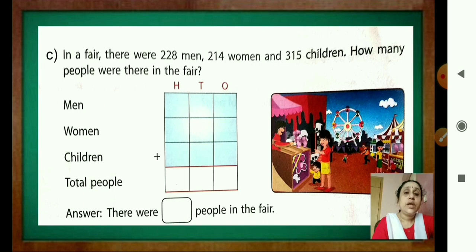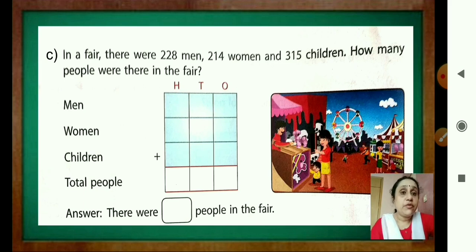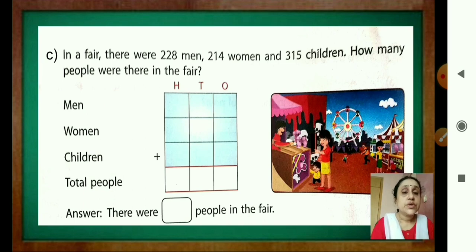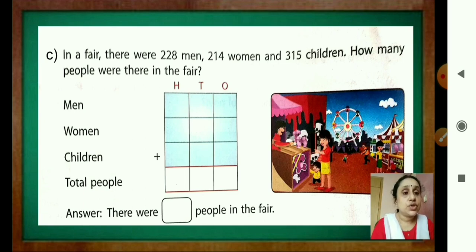Now this question: in a fair there were 228 men, 214 women, and 315 children. How many people were there in the fair? Write the number of men, number of women, and number of children, then add these three numbers to get the total number of people at the fair and write the answer. Have you understood, children? Read the question carefully, write down the numbers in their place, and do the addition to get the total.